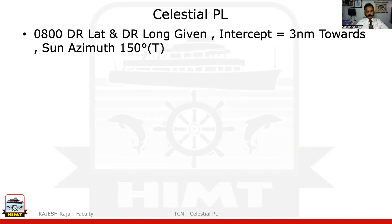Let us say at eight o'clock, I was given a DR lat and DR long. In chart work, the intercept is given to you — in PracNav you calculate it, but here it is given. The intercept given is 3 nautical miles towards, and the Sun's azimuth was 150 degrees. Let us see how we proceed and what is the concept of this PL.